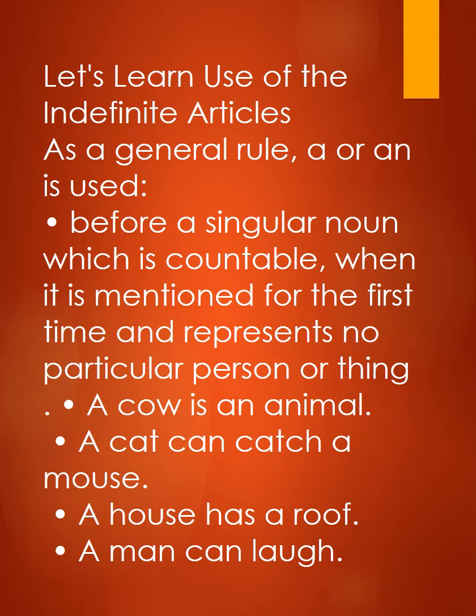Jab bhi singular countable nouns hon — yani nouns jinko hum count kar sakte hain aur woh singular form mein hon — jaise 'a boy', 'an apple' — tab hum Indefinite Article ka use karte hain. For example, 'A cow is an animal.' Yahan hum kisi ek particular cow ki baat nahi kar rahe, balki general sense mein baat kar rahe hain.